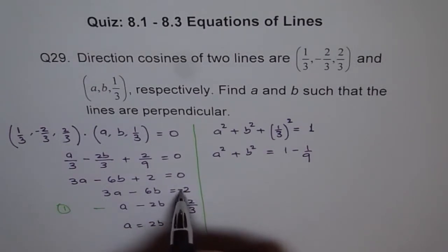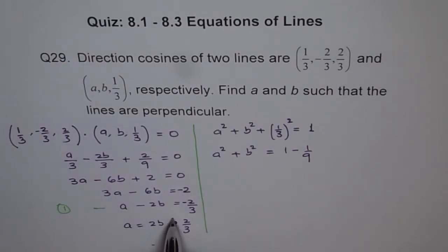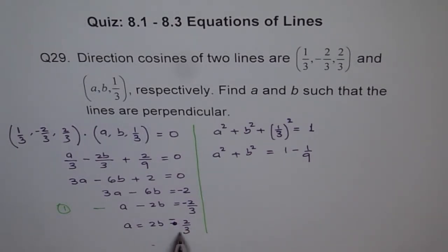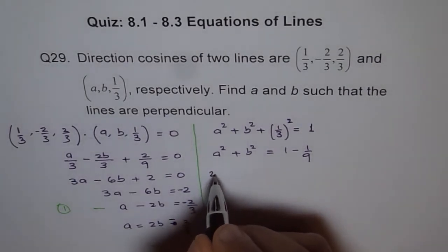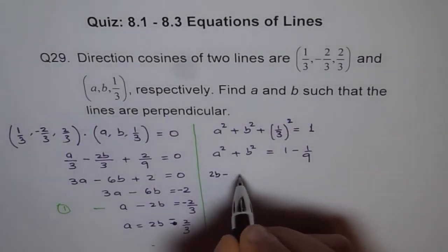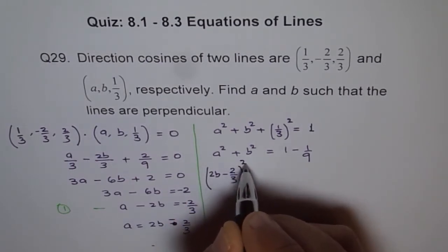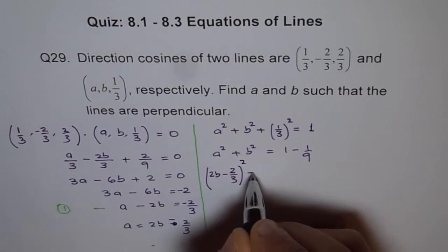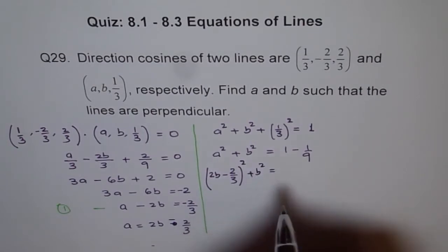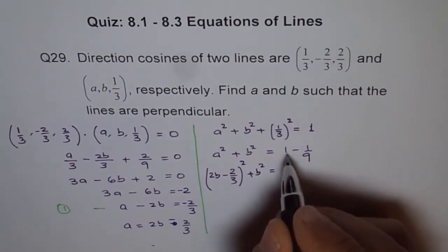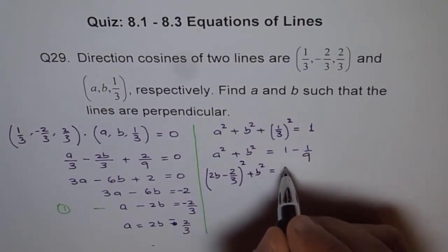Actually, correcting the sign: since 3A - 6B + 2 = 0 gives 3A = 6B - 2, so A = 2B - 2/3. We substitute this into the second equation: (2B - 2/3)² + B² = 8/9.